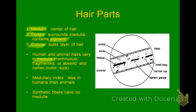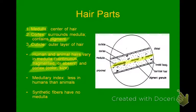The medulla depends on a couple of things. First, they're different between human hairs and animal hairs. They can be continuous, which is more likely in a dog; fragmented, kind of like a dotted line; or absent. The variation in the cortex is the color and size due to pigment granules. Strands of hair can be different thicknesses depending on a person's genetic makeup. Medulla can be continuous, fragmented, or absent depending on genes — that's a normal human variation, just like fingerprints. The medullary index, which is the measure of how thick the medulla is, is less in humans than in animals. Synthetic fibers don't have a medulla.